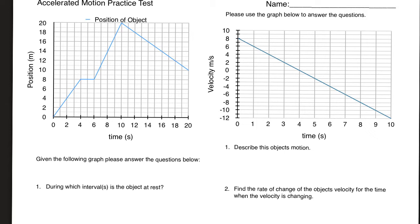Let's talk about the position graph first. I am testing to see if you know that the slope of the position graph is velocity — not just speed, but velocity. It tells you not only how fast you're going but in what direction. It should also be assumed that if your graph is curved, the object is accelerating.